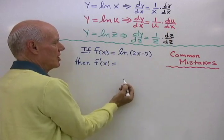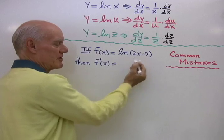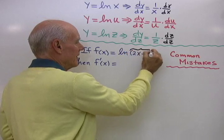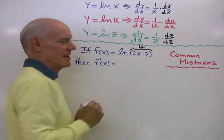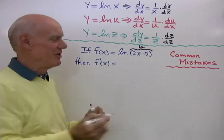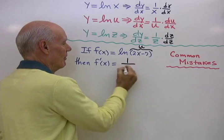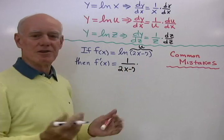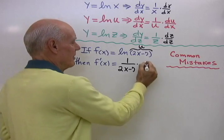Okay, so according to my chain rule, I have natural log of some function of x, natural log of u. That's all you have to see is that that looks like u, then the derivative is going to be 1 over 2x minus 7 times the derivative of 2x minus 7, which is 2.